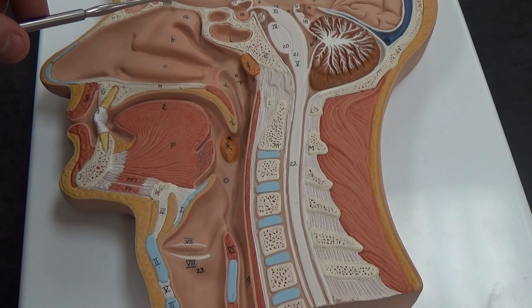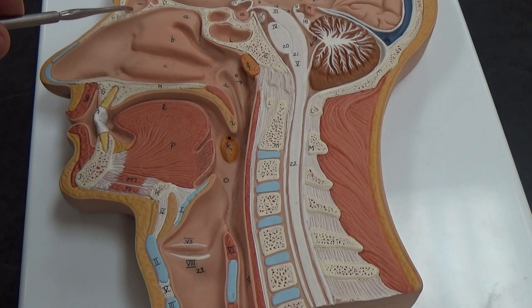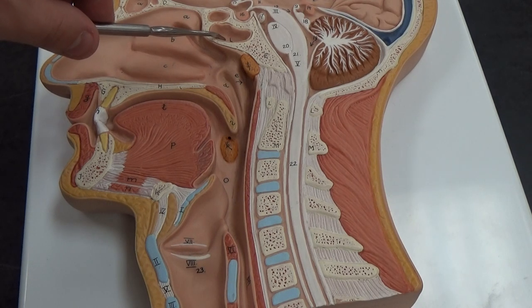You have the cribriform plate up here. You have the frontal sinus way up here in the frontal bone. You have the sphenoid sinus back here.